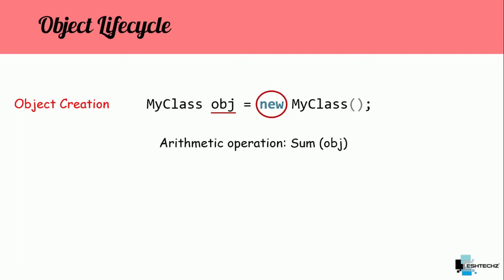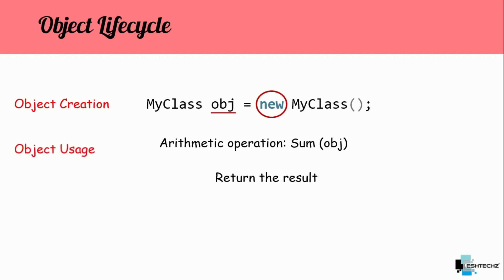Next is object usage. Let's say we are performing an arithmetic operation and storing the result in our object. Once we execute all the operations we return the result, and this particular process is object usage.